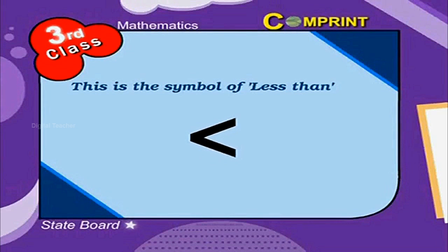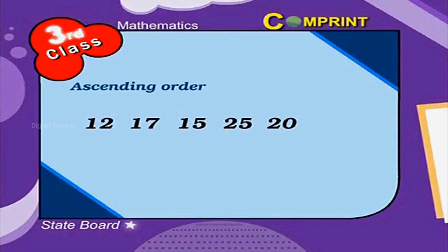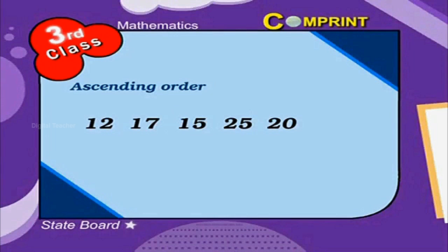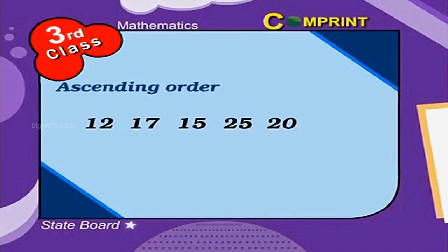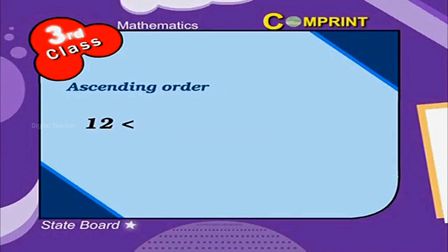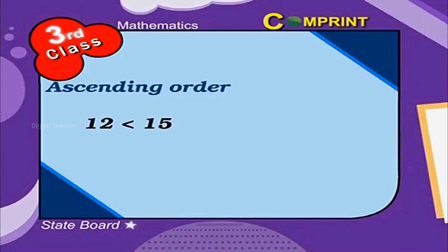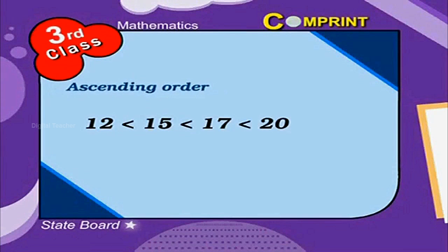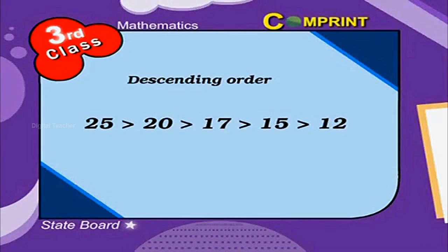Here are some numbers in disorder: 12, 17, 15, 25, and 20. If we put these numbers in ascending order, we get 12, 15, 17, 20, and 25.